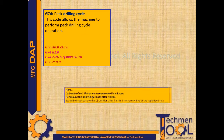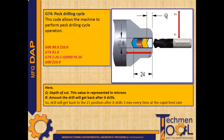G74 peck drilling cycle. This code allows the machine to perform peck drilling cycle operation. In the following program, tool rapidly moves to X0 Z10 position. After that rapid movement, peck drilling cycle starts by moving the tool to the Z-26.5 position with values Q3000 and F0.1. Q is the depth of cut in microns. R is the amount the drill will retract after it drills — meaning the drill will return to the Z1 position after drilling 3mm every time, at rapid feed rate.